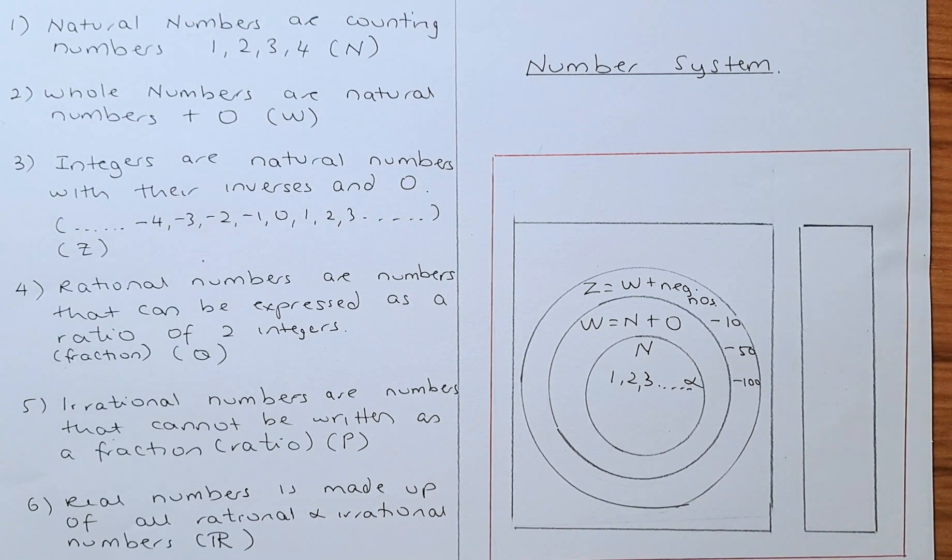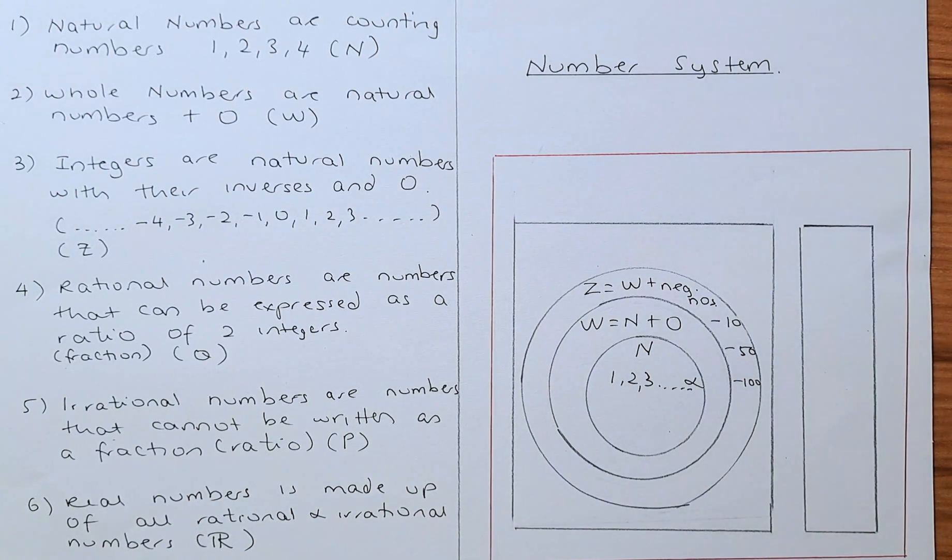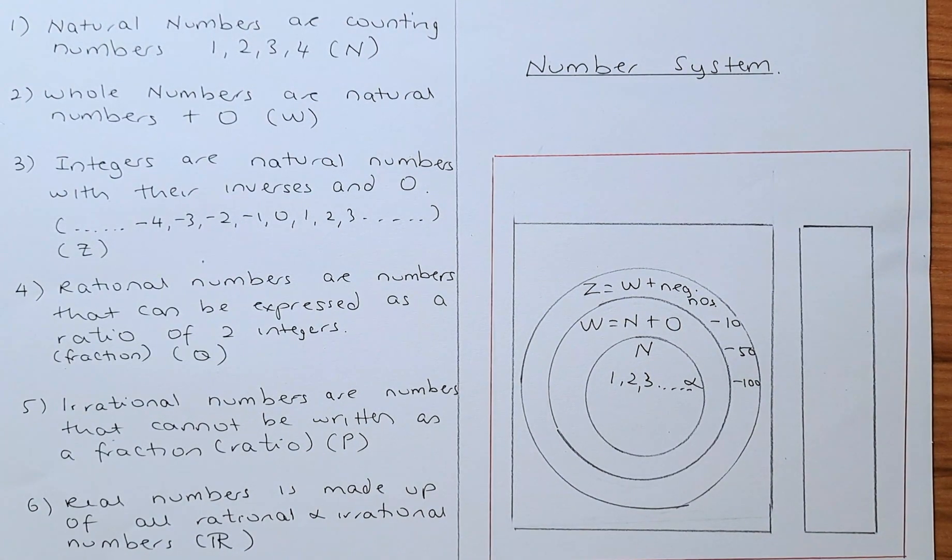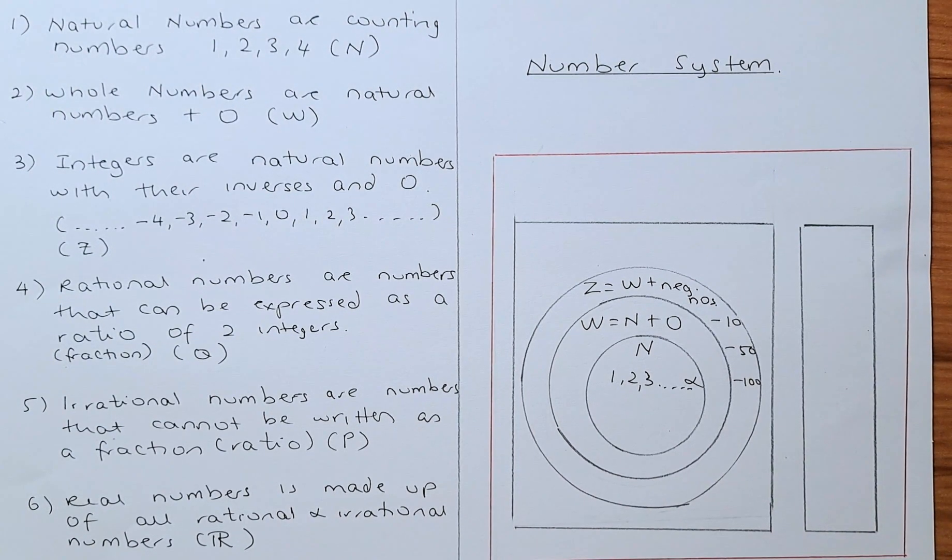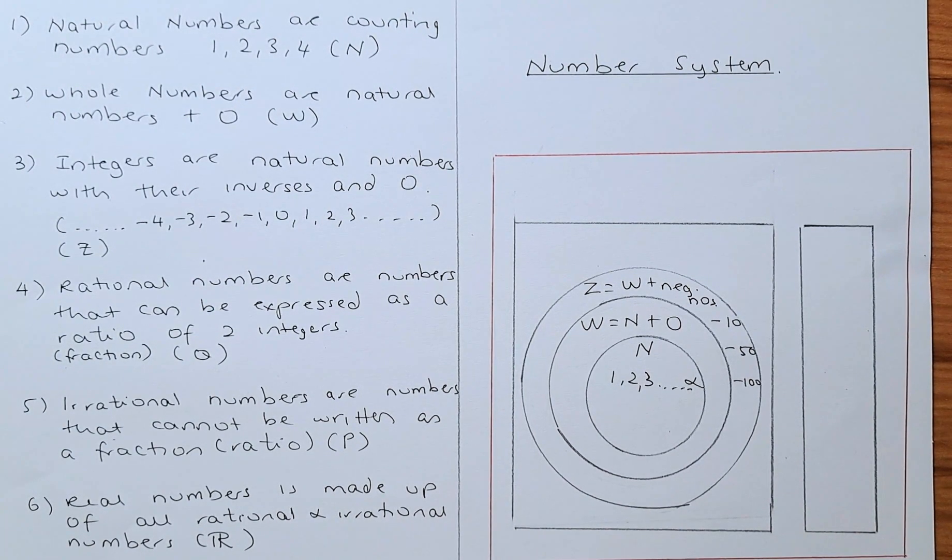Great! Now we look at the fourth number. They are called the rational numbers. What are rational numbers? Rational numbers are numbers that can be expressed as a fraction or ratio between two integers.